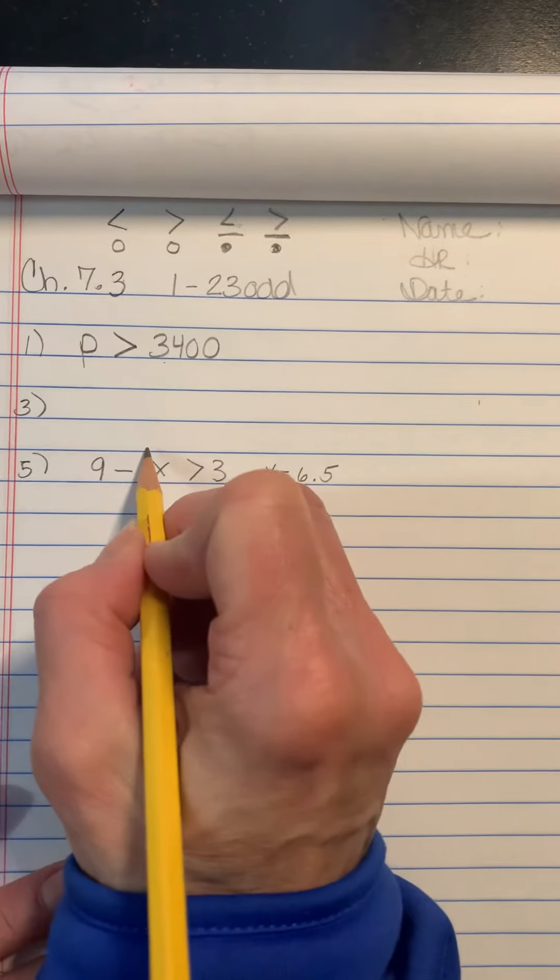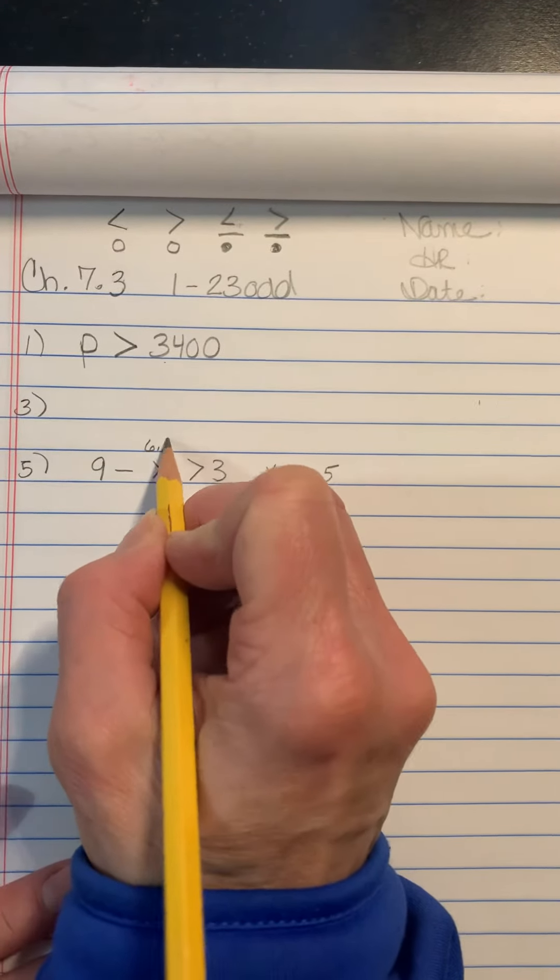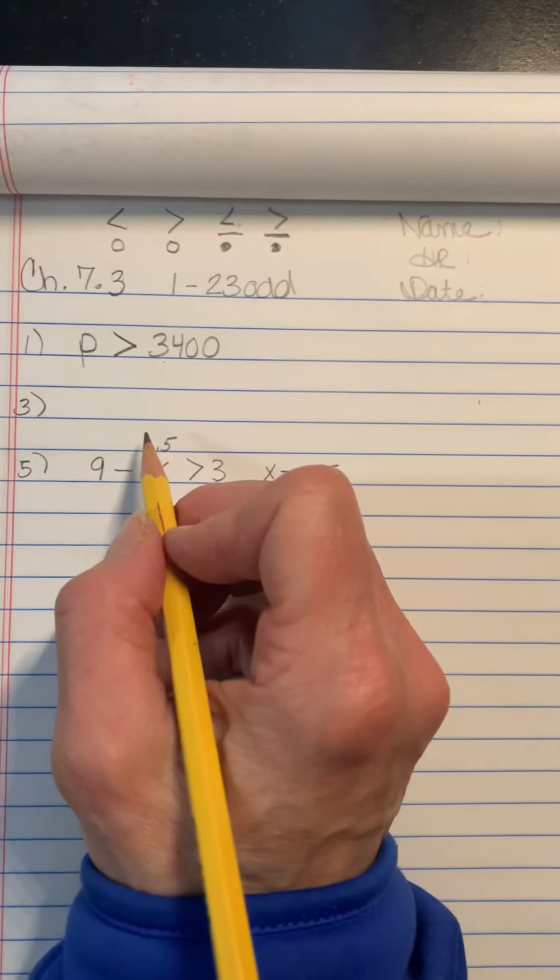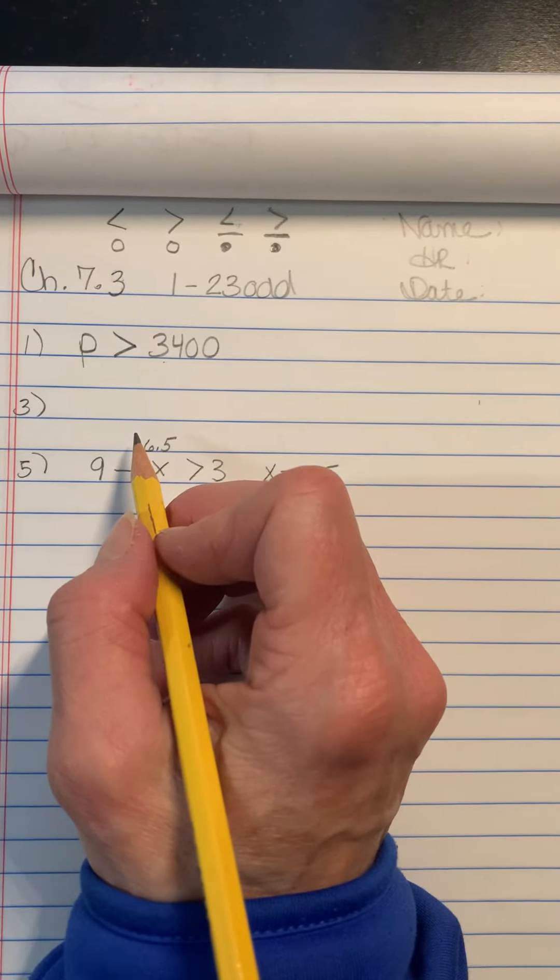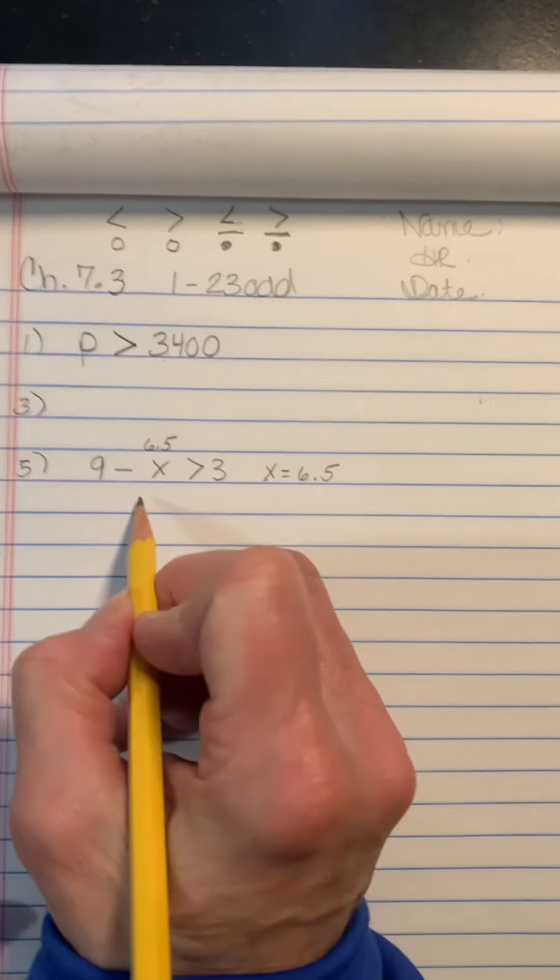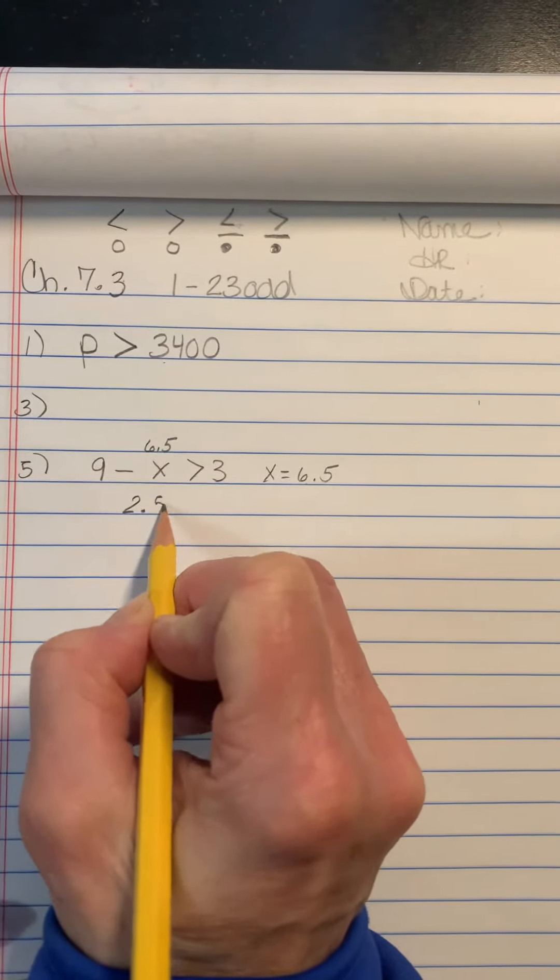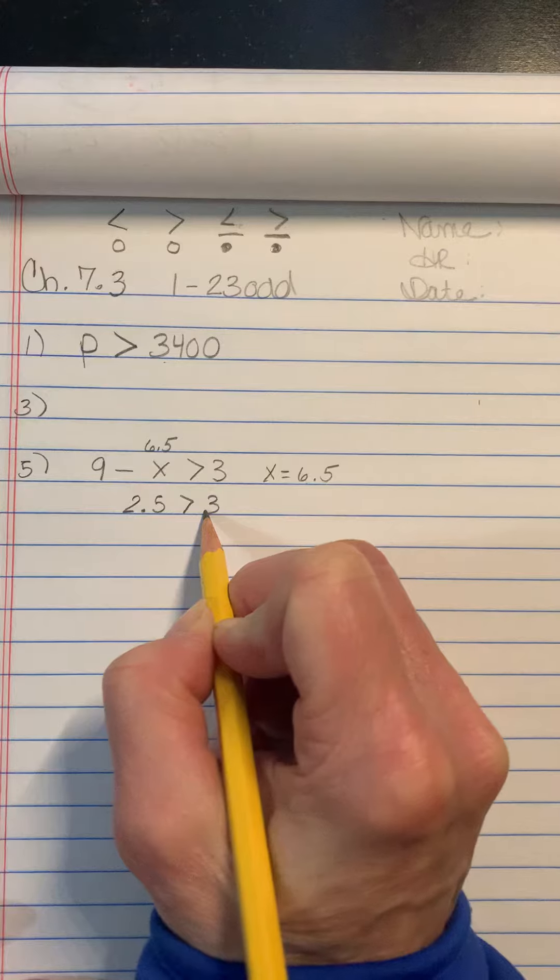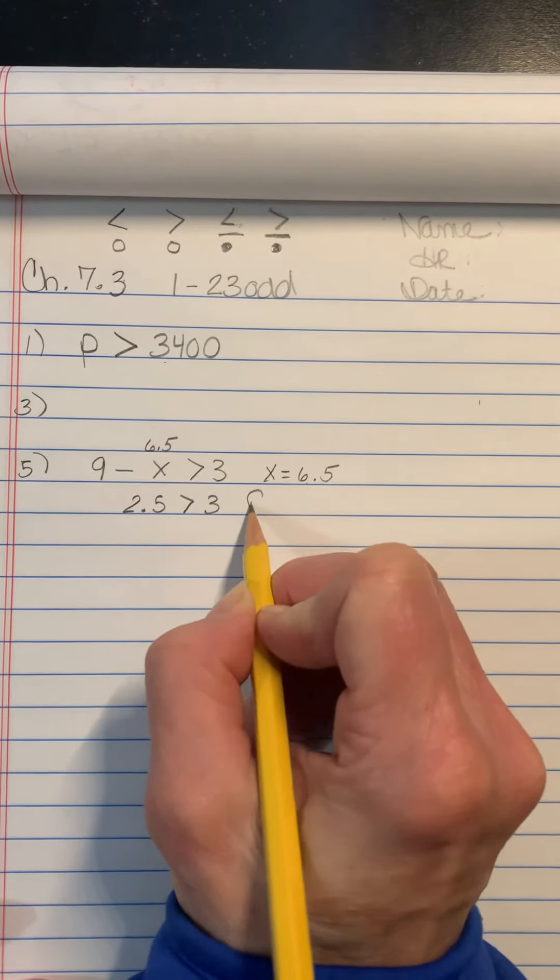So you're going to take that and you're going to put it here and you're going to do 9 minus 6 and 5 tenths. So once you do 9 minus 6 and 5 tenths, you're going to get 2 and 5 tenths. Is 2 and 5 tenths greater than 3? In this case, you would say false.